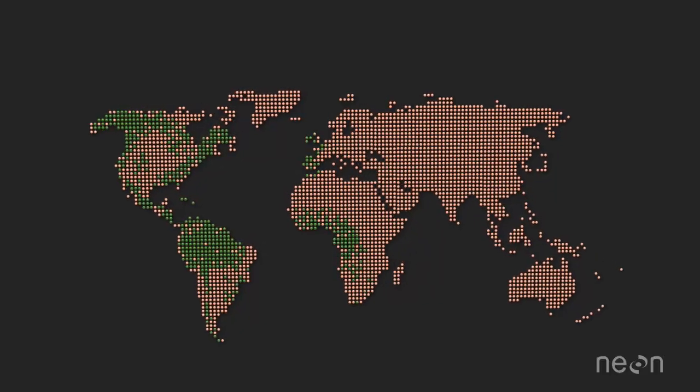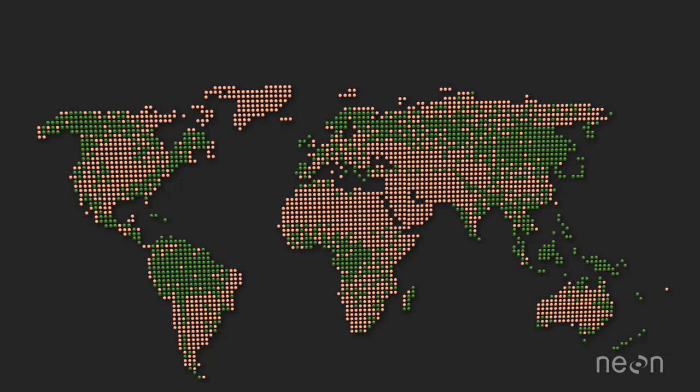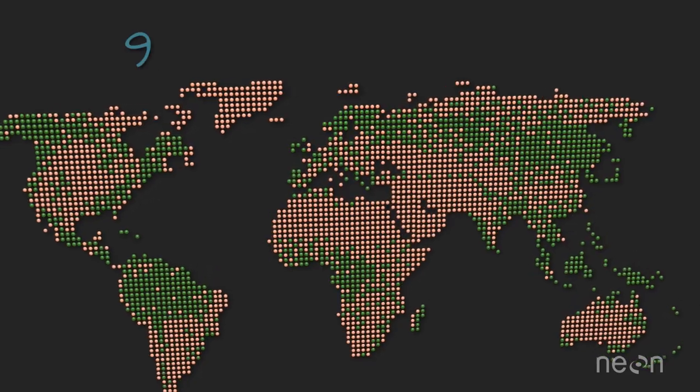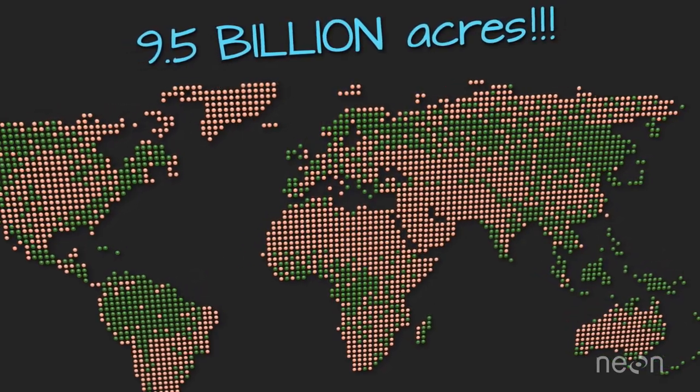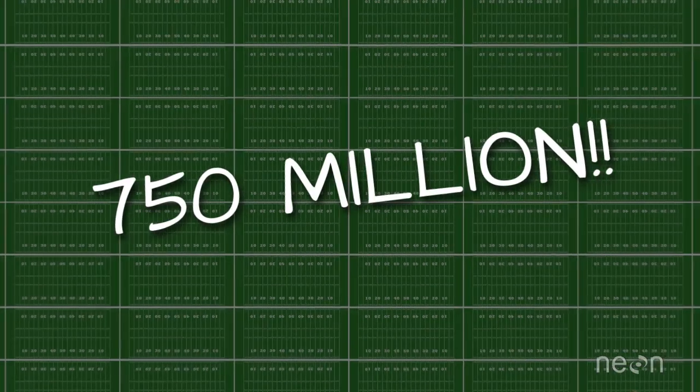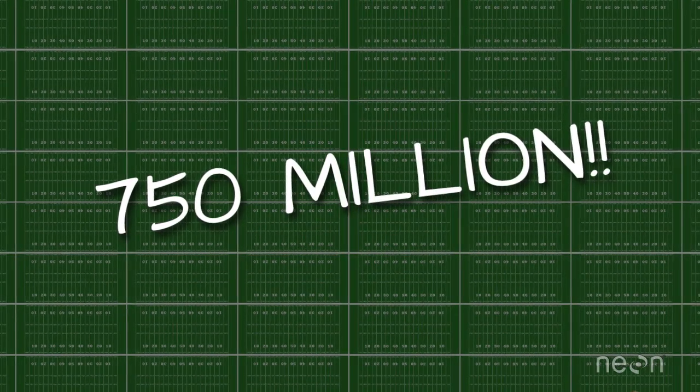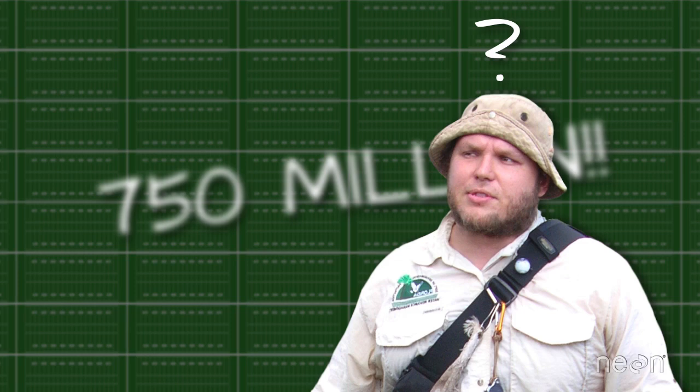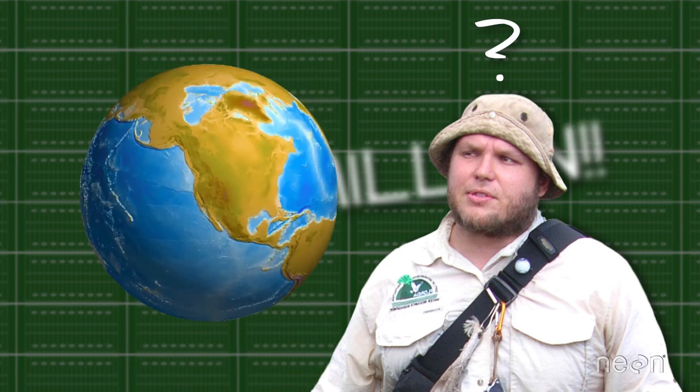However, trees cover almost a third of the Earth's surface. That's 29.5 percent, or 9.5 billion acres. That equals 750 million football fields of trees. So how does a scientist measure 750 million football fields worth of trees across the globe?